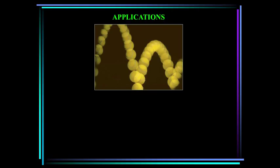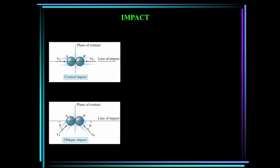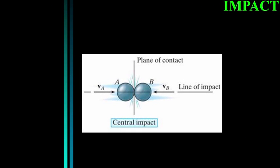If the height from which the ball is dropped and the height of its bounce are known, how can we determine the coefficient of restitution? Impact occurs when two bodies collide during a very short time period, because this causes large impulsive forces to be exerted between the bodies at the point of impact. Common examples are a hammer hitting a nail or a ball being hit by a bat.